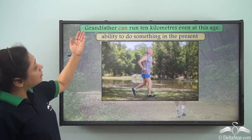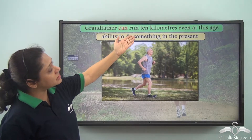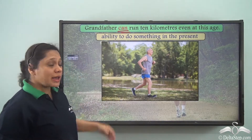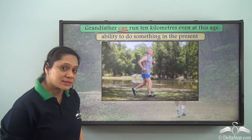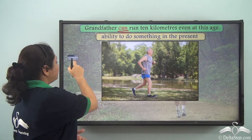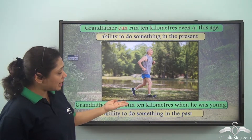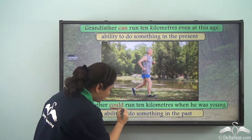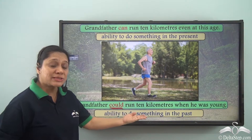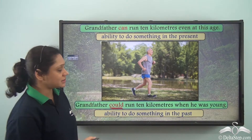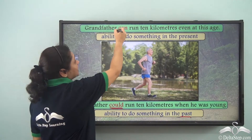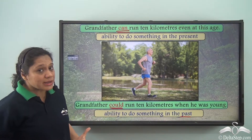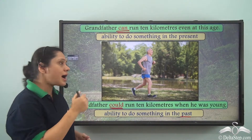If we say 'Grandfather can run 10 kilometers even at this age,' the modal verb can is showing an ability in the present. But if we say 'Grandfather could run 10 kilometers when he was young,' the modal verb could is showing an ability in the past. So can shows present ability and could shows past ability.